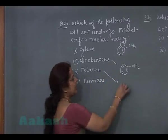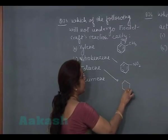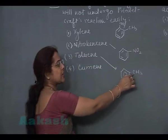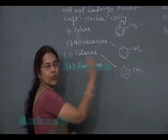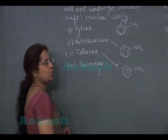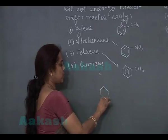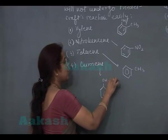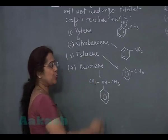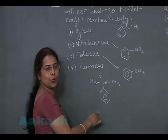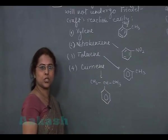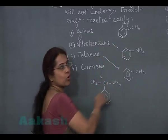Third option is toluene. In the structure of toluene, there is one methyl group which is attached to benzene ring. So again ring activating group, electrophilic substitution reaction will proceed smoothly. Fourth option is cumene. The structure of cumene is isopropylbenzene. Isopropyl group is also a ring activating group. It means here also the electrophilic substitution reaction will proceed smoothly.